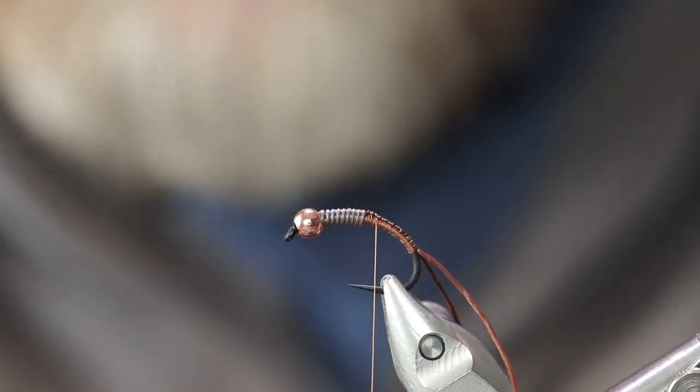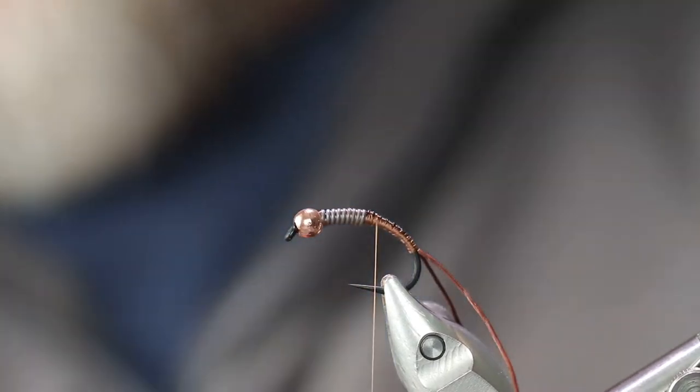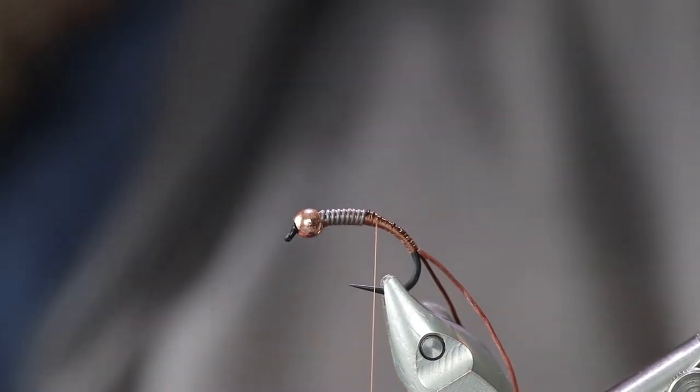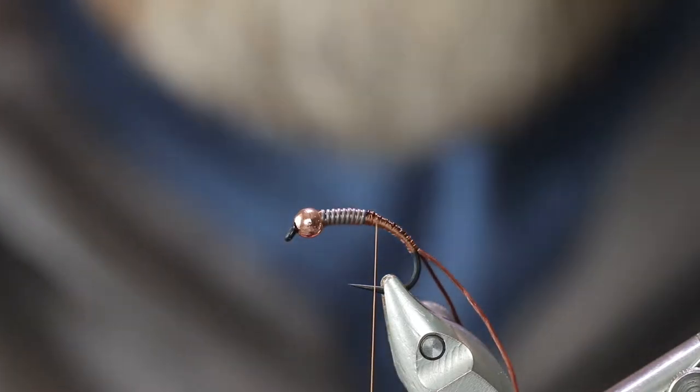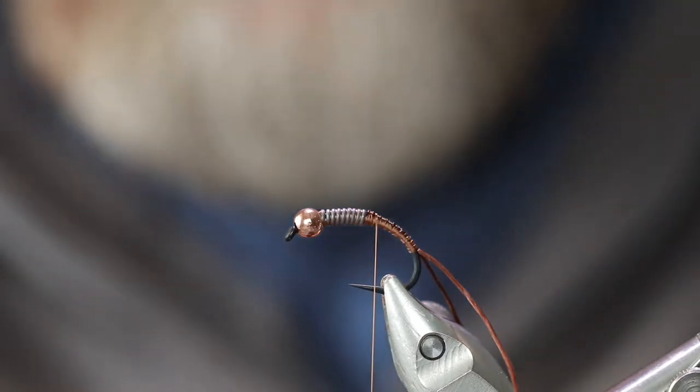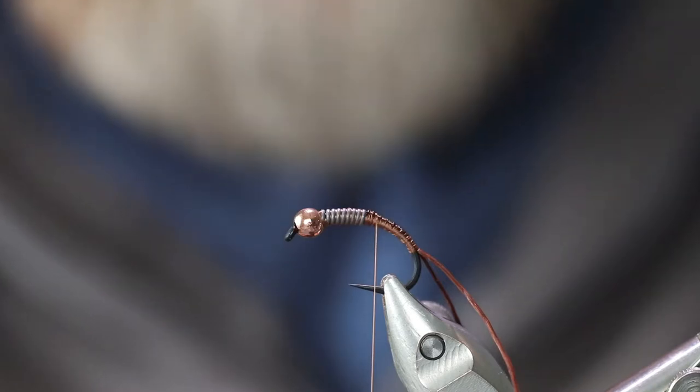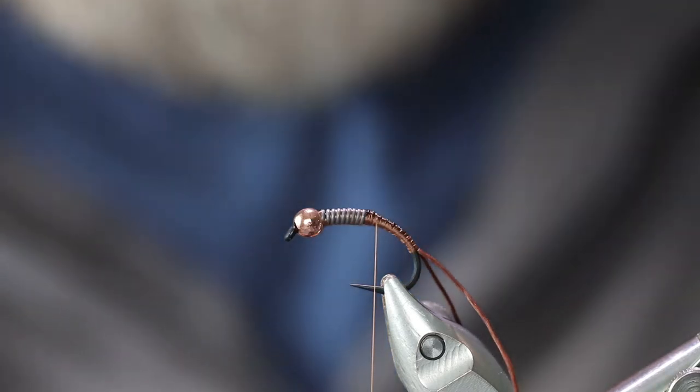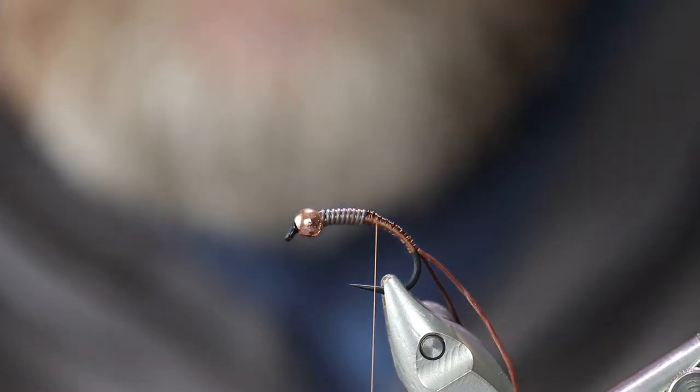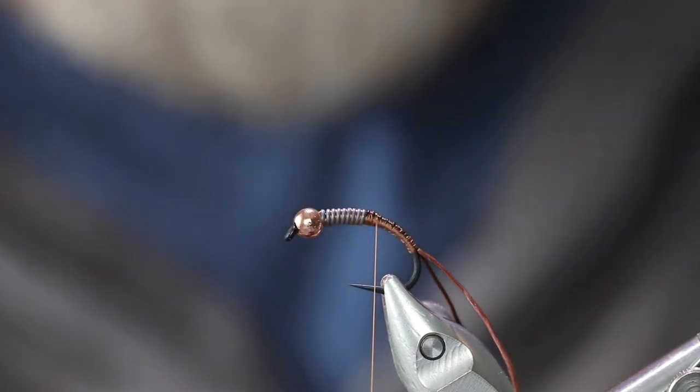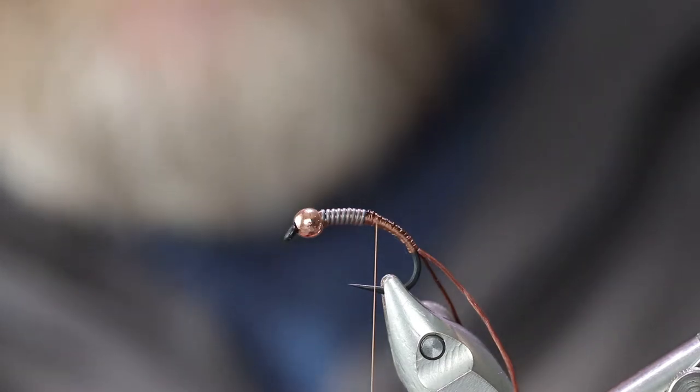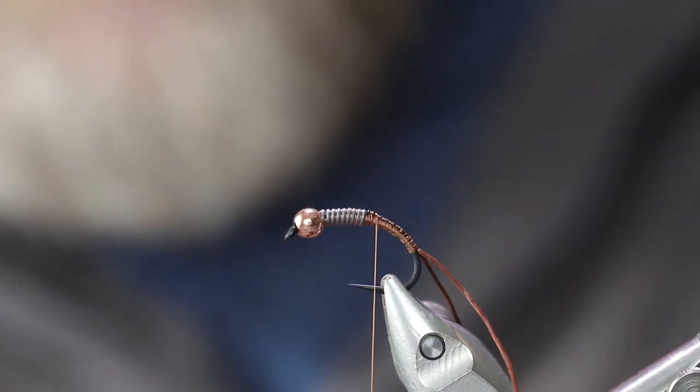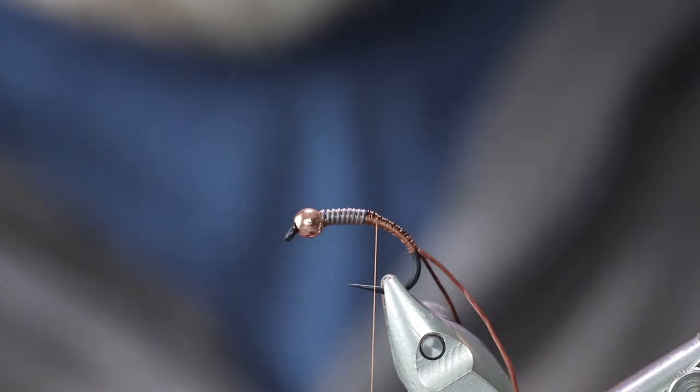So on these flies, on a real stonefly, they're not a round insect. They're flatter by a considerable amount than they are round. So I like to tie my wire in one strand on one side and the other color strand on the other because I'm doing a two color fly here. It's got a brown UTC wire in large and black UTC wire in large.